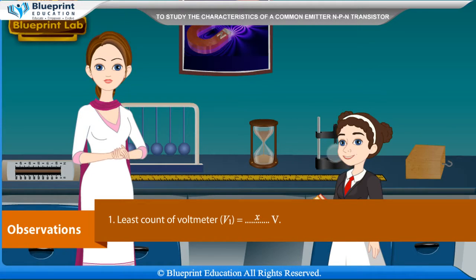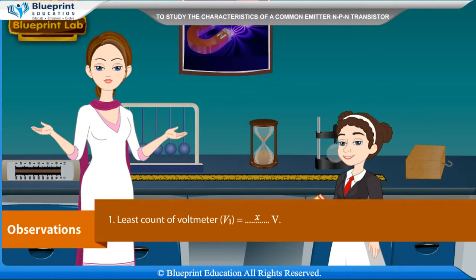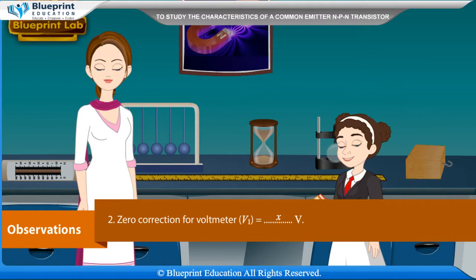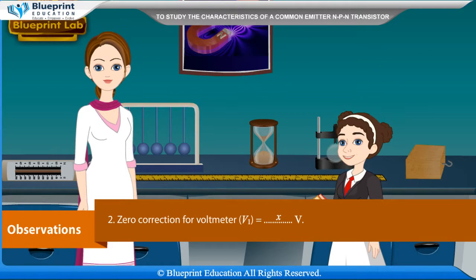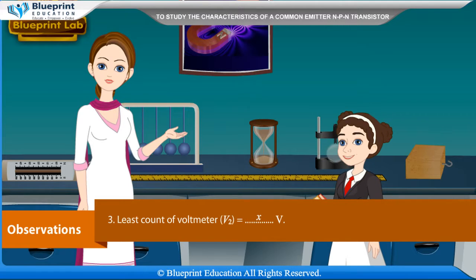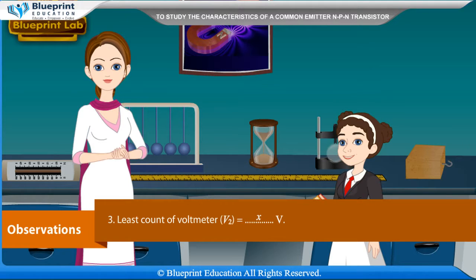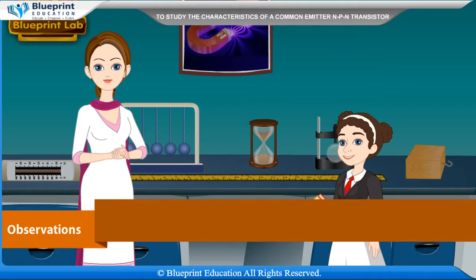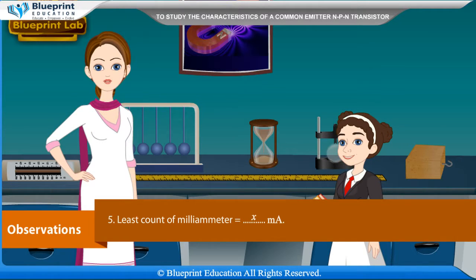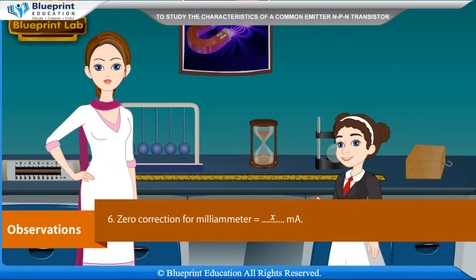Observation: Least count of voltmeter V1 is equal to X volt. Zero correction for voltmeter V1 is equal to X volt. Least count of voltmeter V2 is equal to X volt. Zero correction for voltmeter V2 is equal to X volt. Least count of milli-ammeter is equal to X milli-ampere. Zero correction for milli-ammeter is equal to X milli-ampere.